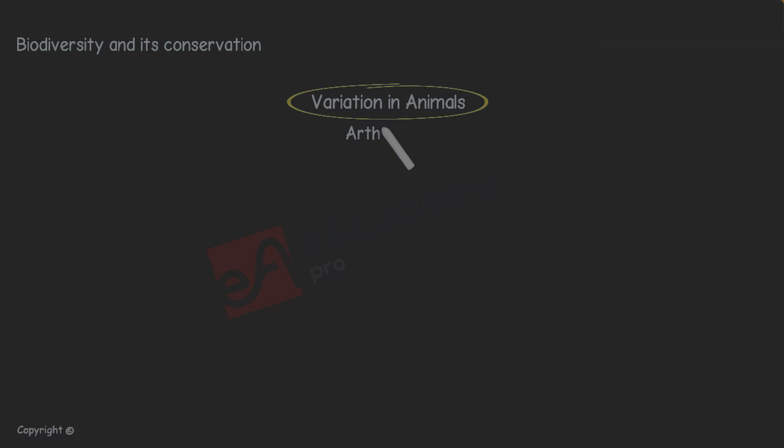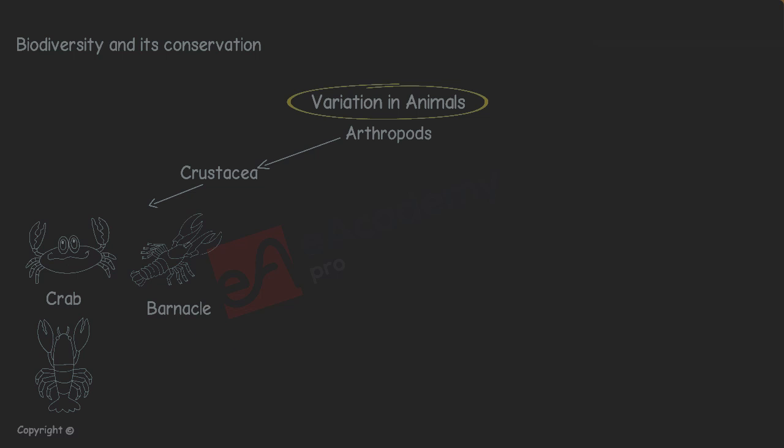More about arthropods. Arthropods are divided into four subgroups. Crustacea have gills, more than six legs and two pairs of antennae. Examples: Crab, Barnacle, Lobster, Shrimp.